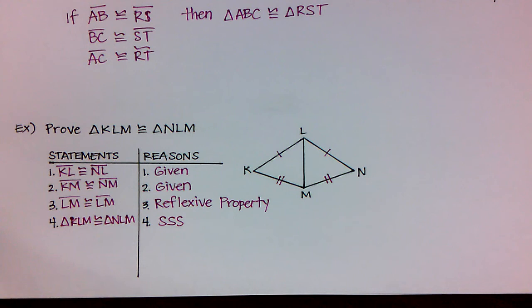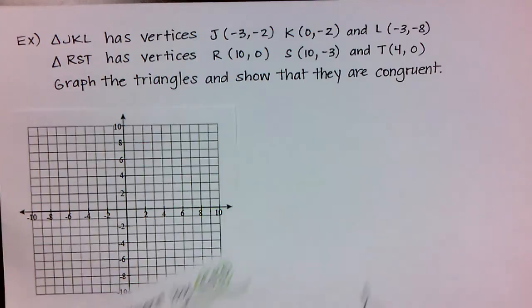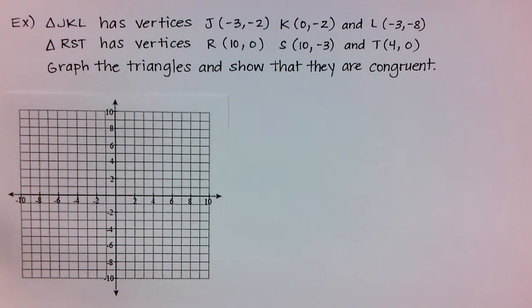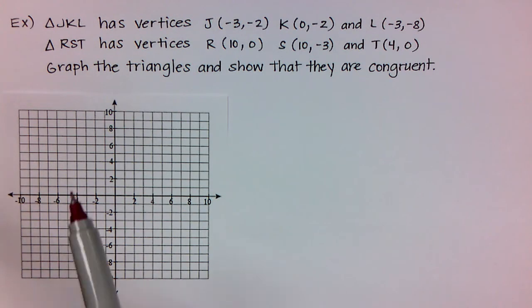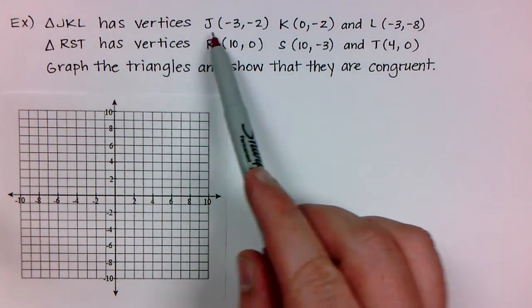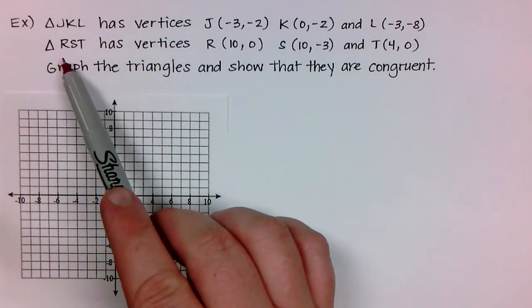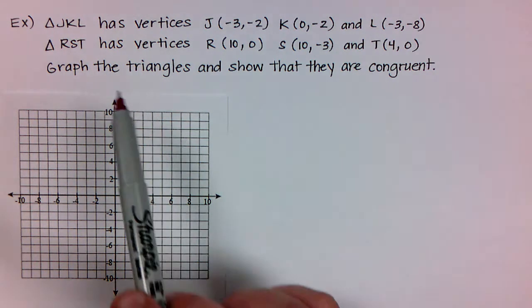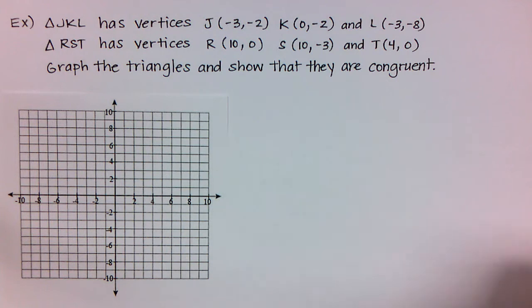This is pretty awesome and really easy to do. Now we're going to look at an example that shows a little bit more information. This example gives me two triangles: the first is triangle JKL with its vertices, and the second is triangle RST with its vertices. I need to graph the triangles and then show that they are congruent.